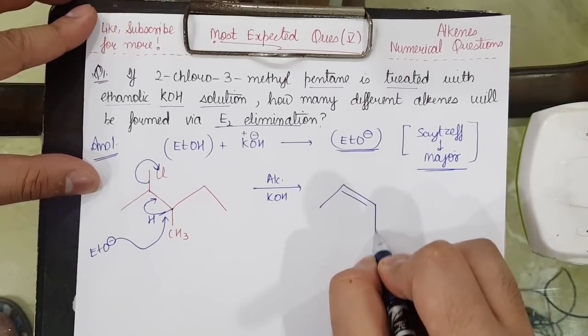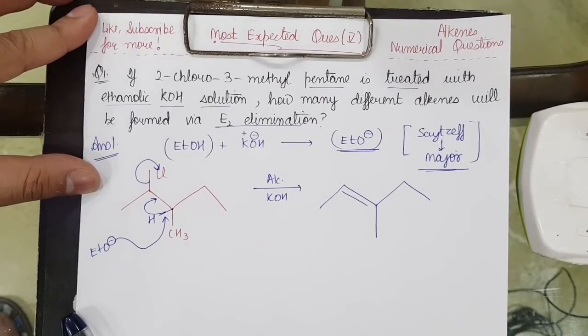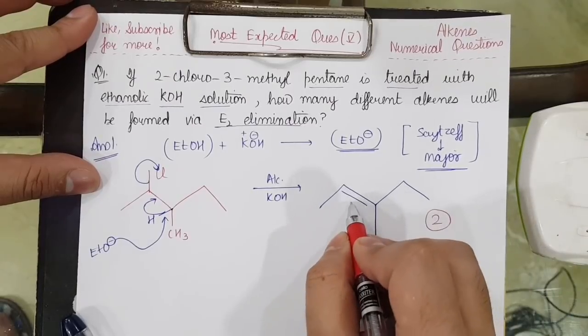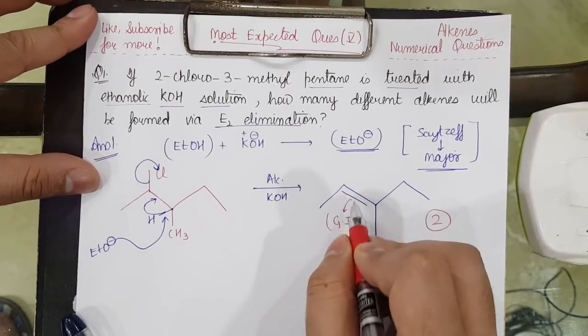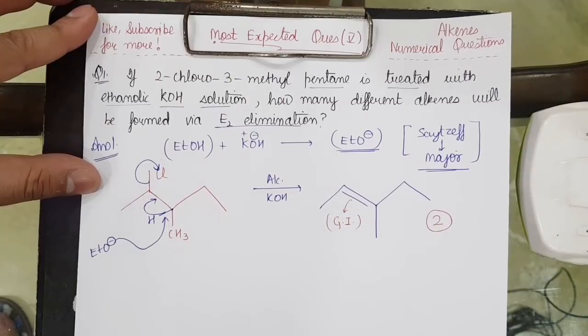Here CH3 is present and here ethyl group is present. How many alkenes are forming? We will get the formation of 2 alkenes because this can show geometrical isomerism, cis-trans isomerism, or to be more exact E-Z isomerism will be shown. Similarly, the same question is given.